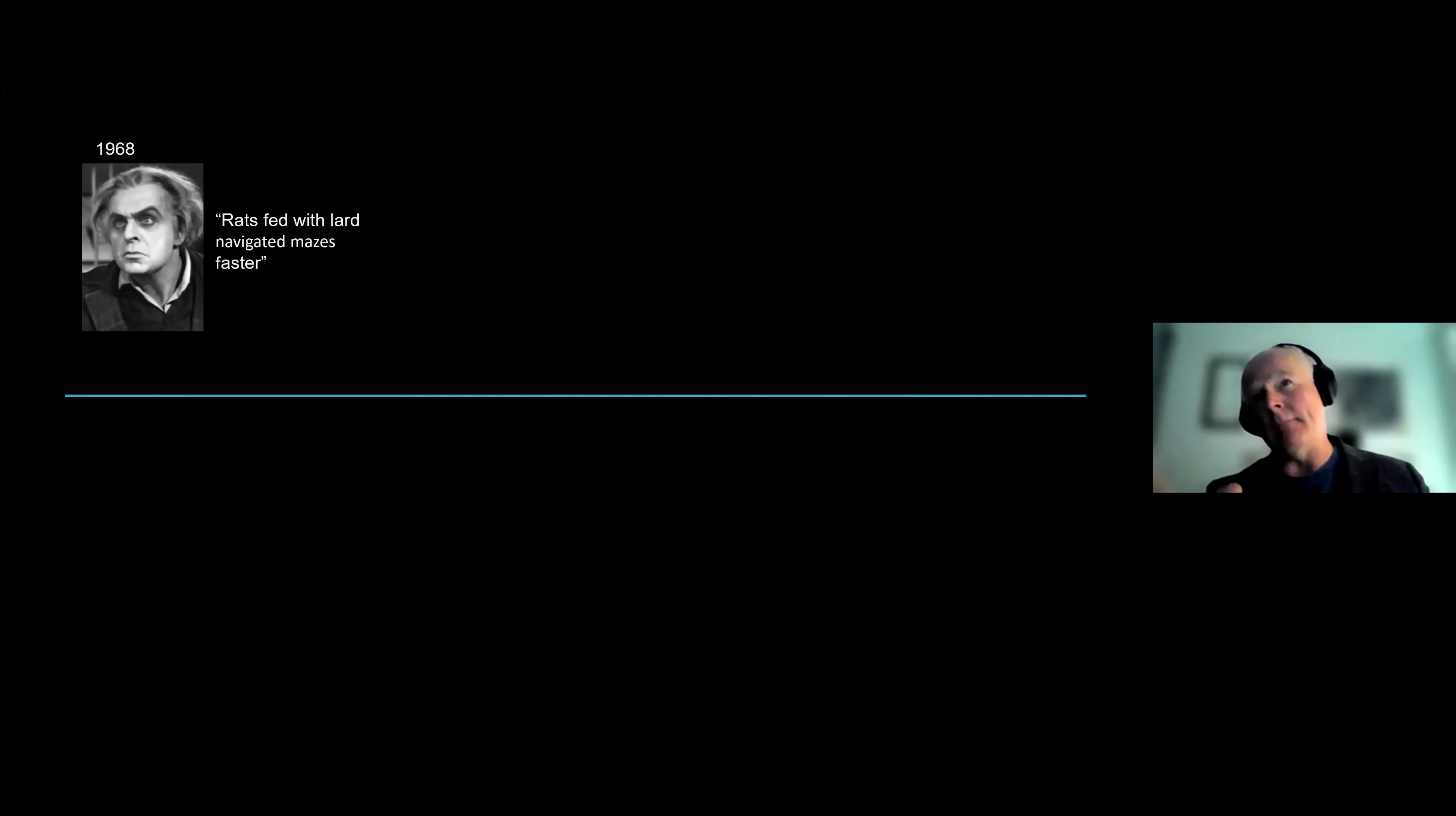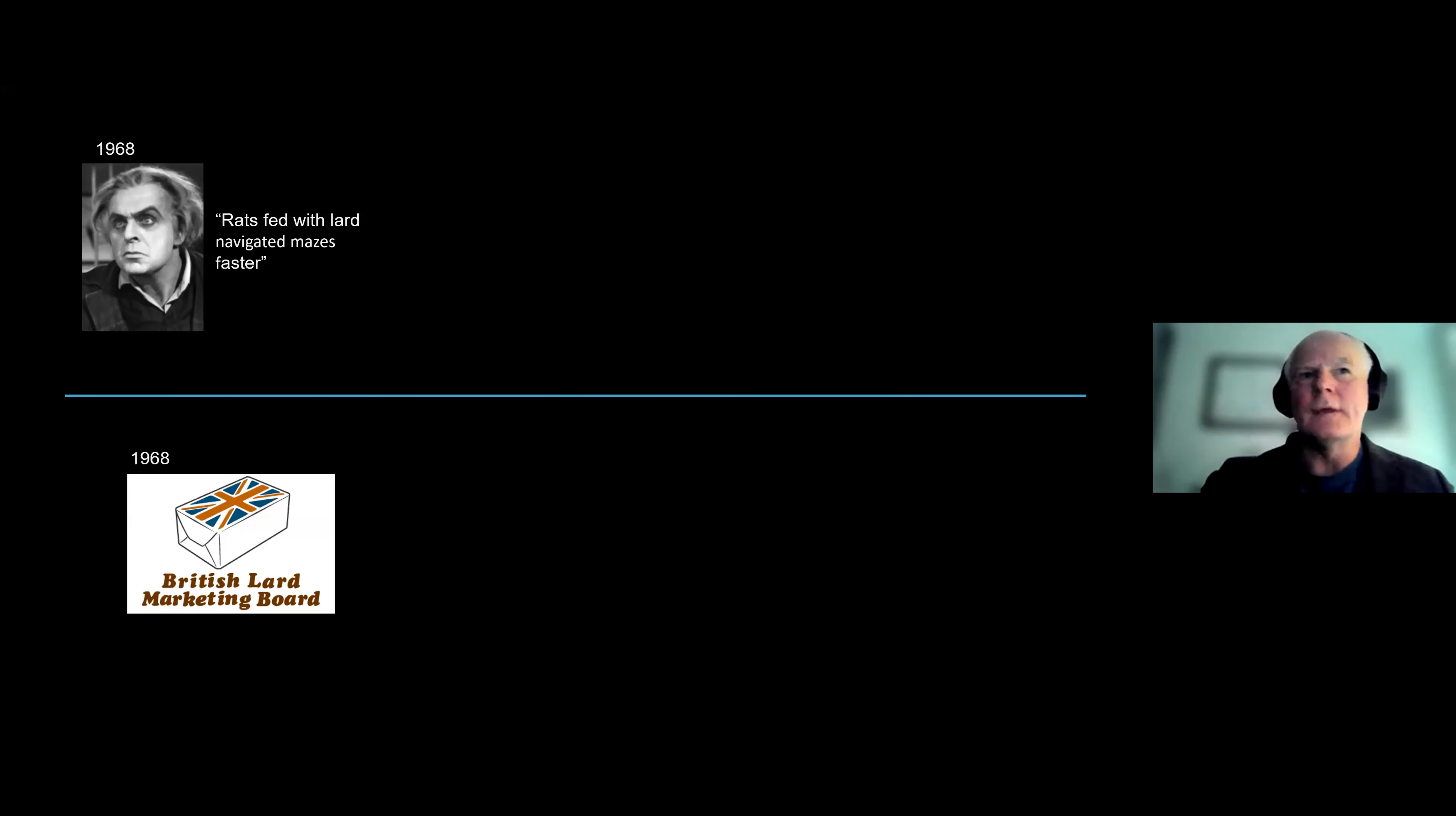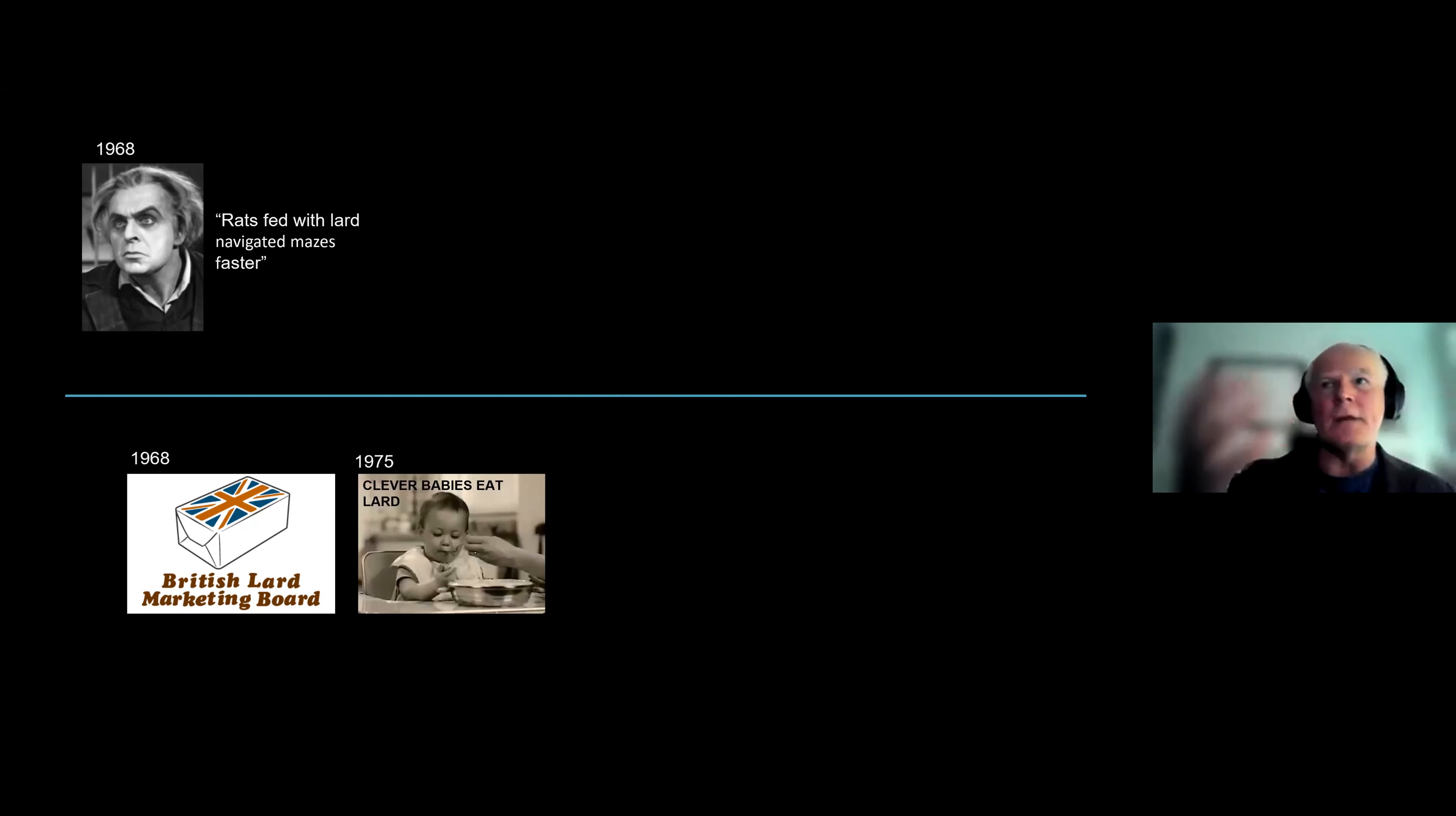But what's been happening? What has been happening at the same time? Dr. John and his contemporaries have been doing this academic research in the world of academia. And what's been happening in the rest of the world? Well, this was Dr. John's fantastic theory in 1968. He proposed that rats fed with lard seemed to be able to navigate mazes much quicker. So lard seemed to have an impact on their cognitive ability. He published his article. And then what happened was this was picked up by the British Lard Marketing Board. And the British Lard Marketing Board, they are an industry body that represents all the companies that sell this stuff for people to eat. And they think, oh, great. We can use this to sell more. And so they start a marketing campaign. They invest a lot of money, a lot of time in running a marketing campaign: Clever babies eat lard through to 1975. Give your kids lard and they will do better at school.